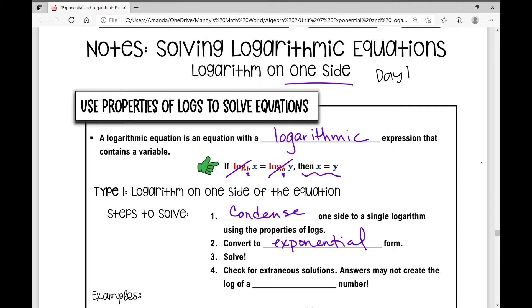And then we're going to solve. It's very important that you check for extraneous solutions. And what are those? Those are solutions that are not valid. So how do we check for those? You just need to remember that answers may not create the log of a negative number.